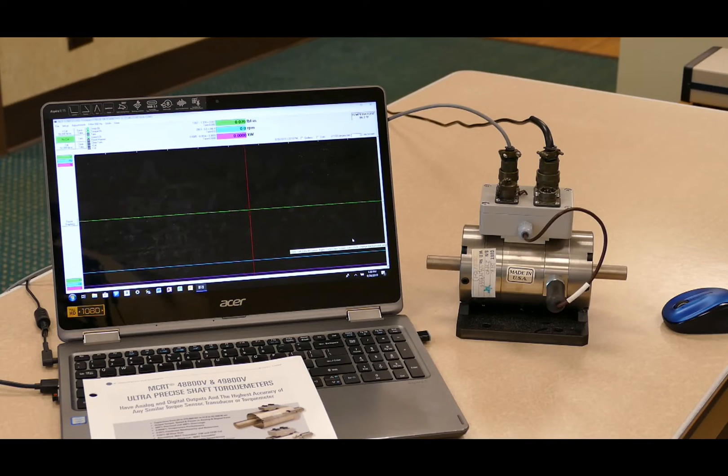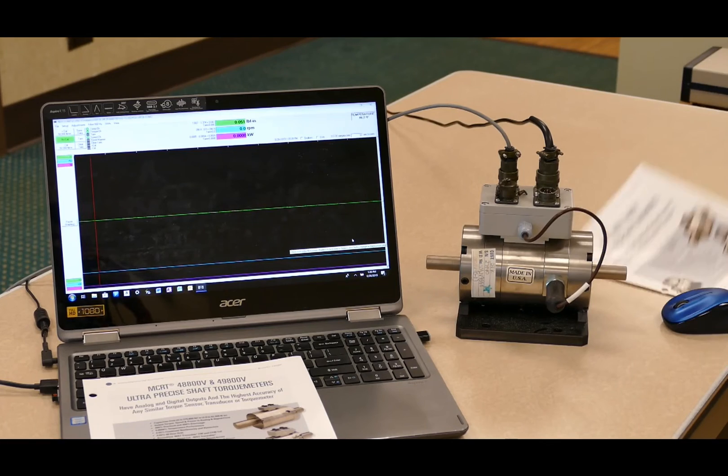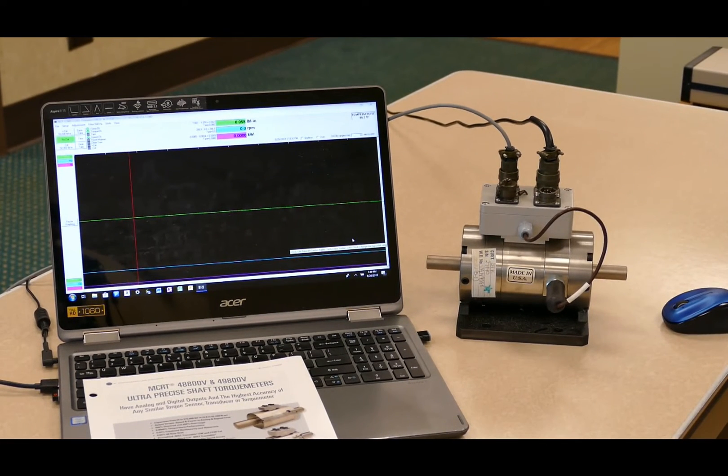All units feature significant overrange on the electrical output signal. That means we don't clip at full scale. We allow the electrical output to extend beyond its full scale, so instead of stopping at 10 volts, the electrical output will extend up to 15 volts. The advantage of this overrange is that it will not clip the peaks and it will not affect the accuracy of the average display torque.